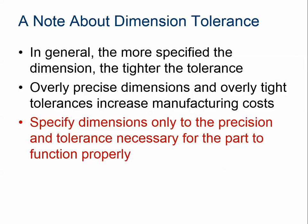Now, talking about dimension tolerance: the more specified the dimension, the tighter the tolerance. Precise dimensions and overly tight tolerances indicate increased manufacturing costs. You always want to use a precision and tolerance that's necessary for the part to function properly. If you're always looking for an interference or a clearance fit, there's a way to use tolerances to control that. But the more tolerance you allow, the easier it is to manufacture, the less expensive it is, and sometimes it's just a little bit of trial and error to make sure things work.